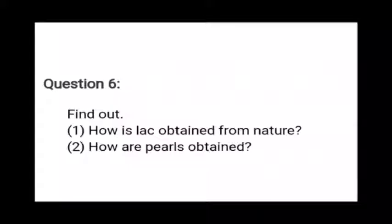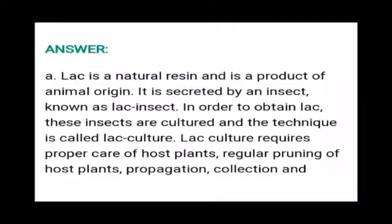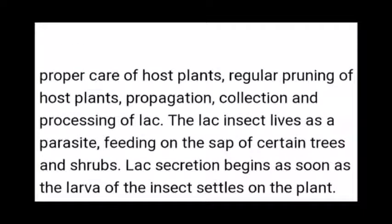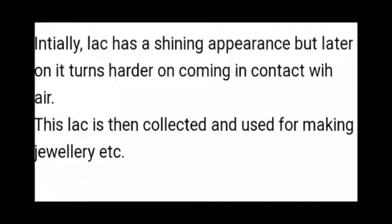Question number six: Find out how lac is obtained from nature. Lac is a natural resin and a product of animal origin. It is secreted by an insect known as the lac insect. To obtain lac, these insects are cultured through a technique called lac culture, which requires proper care of host plants, regular pruning, propagation, and collection and processing of lac. The lac insect lives as a parasite, feeding on the sap of certain trees and shrubs. Lac secretion begins as soon as the larva settles on the plant. Initially lac has a shining appearance but later turns harder on contact with air, and is then collected and used for making jewelry, etc.